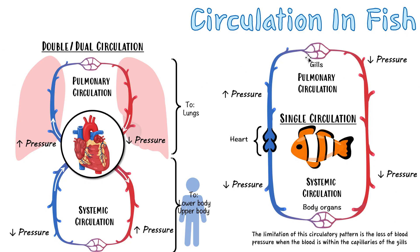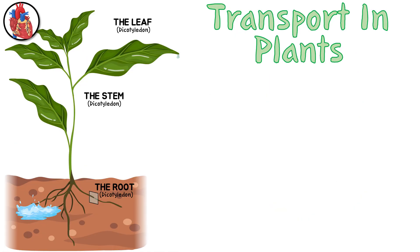Now let's move on to plants. Here we have a plant with roots embedded in the soil — the soil contains minerals, ions, and water. Coming up from the roots is the stem, which holds the plant up, and at the end of the stem we may have leaves, fruits, or flowers. I've labeled this a dicotyledon plant — when we talk about plants in IB Biology, it's always going to be dicotyledons.